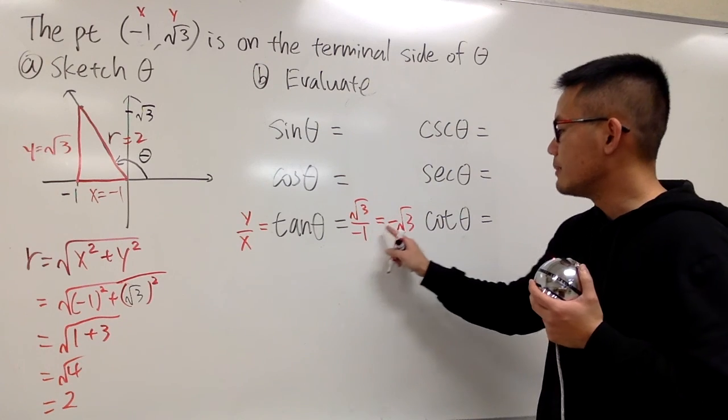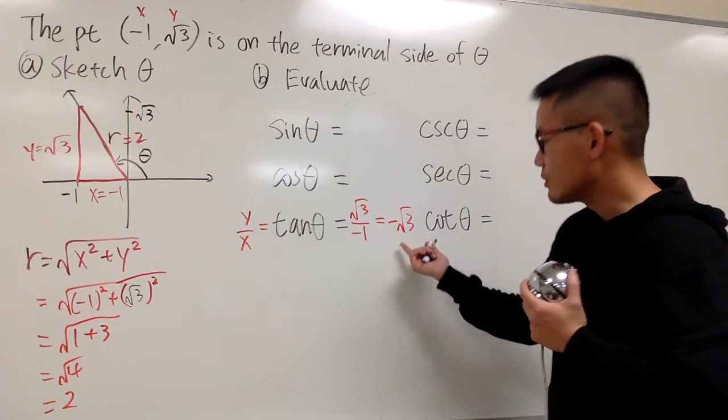This is just negative square root of 3 at the end, right? Divided by negative, and over 1, the 1 doesn't matter. So this is what we have.